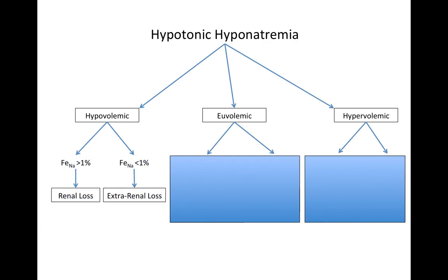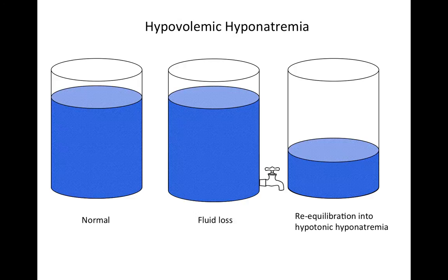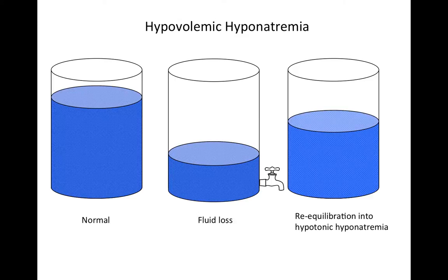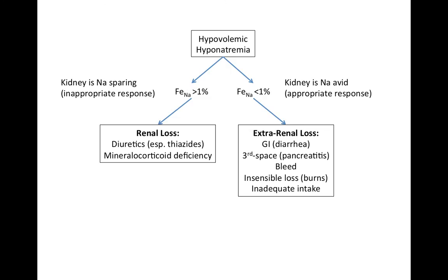In hypovolemic hyponatremia, volume is lost through some mechanism, and re-equilibration to restore serum volume causes hyponatremia. The FENa tells you whether volume was lost through the kidneys or another mechanism. If lost through the kidneys — as with diuretics or aldosterone deficiency — the kidneys are not sodium-avid and FENa will be high. If lost through any other mechanism, the kidneys retain sodium, causing a low FENa.